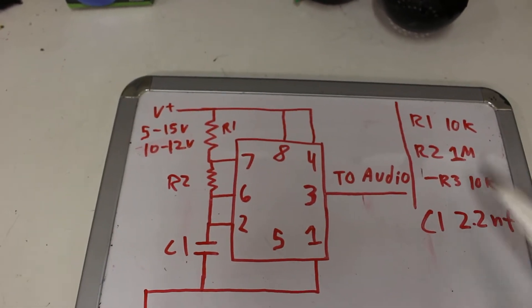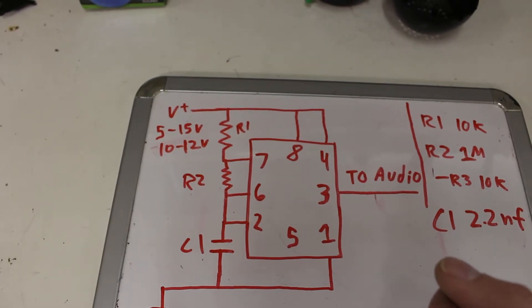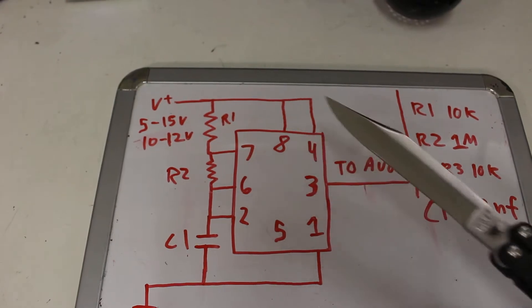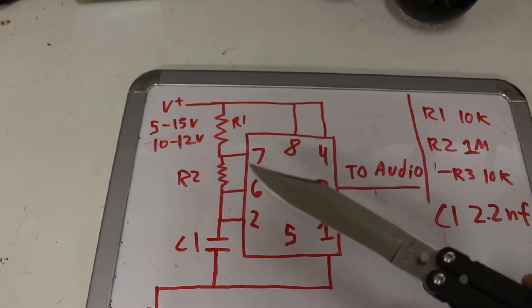R2 is a 1 megaohm trim pot, but I usually put in series a 10k with it also, just so when the trim pot's turned all the way over one way it doesn't short between pin 6 and 7. So it's a 10k and a 1 megaohm. You can do whichever. Yeah, pretty simple.